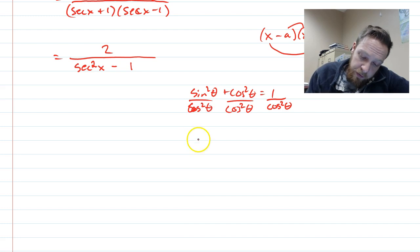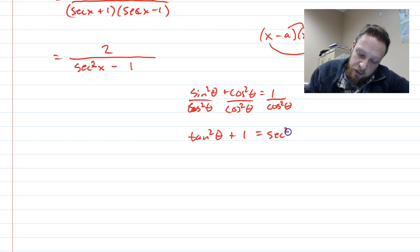And so here's my formula. Tan squared theta, not equals, tan squared theta plus one equals secant squared theta.